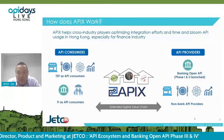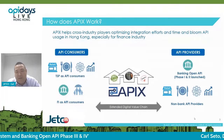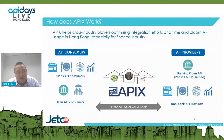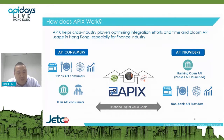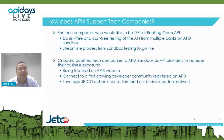Jetco APEX doesn't want to stop at just fulfilling the phase one and two regulatory requirements — we want to expand our scope further. Before, banks were the API providers; now we think banks can also be the consumers. So we have started to acquire non-bank API providers, so that banks and other financial institutions can be API consumers. This makes the ecosystem more exciting and helps grow API usage in Hong Kong.